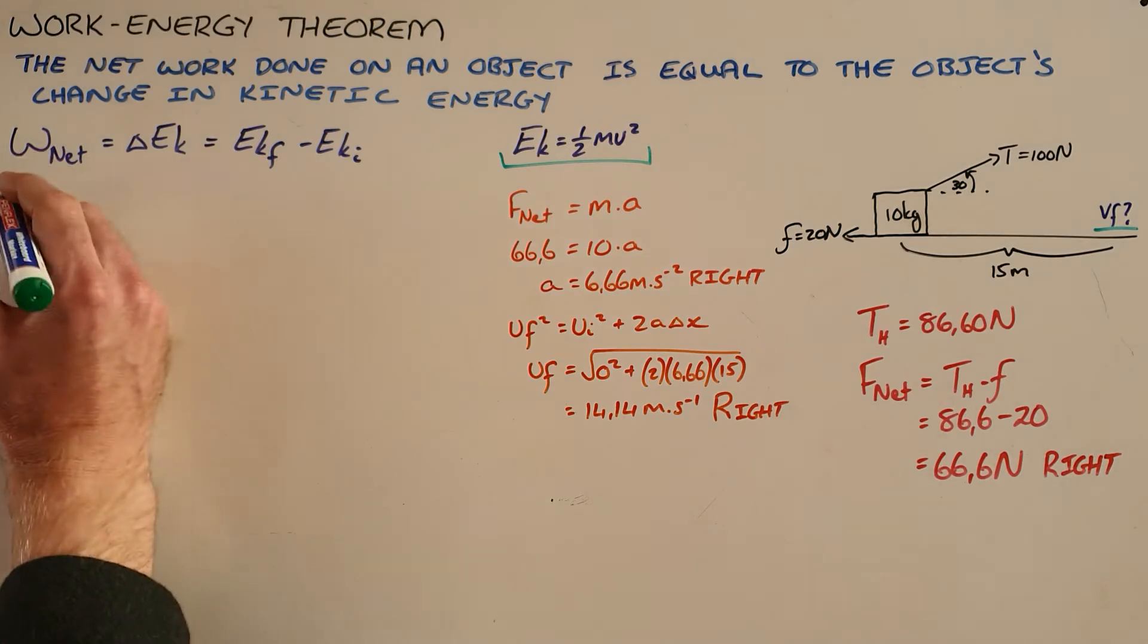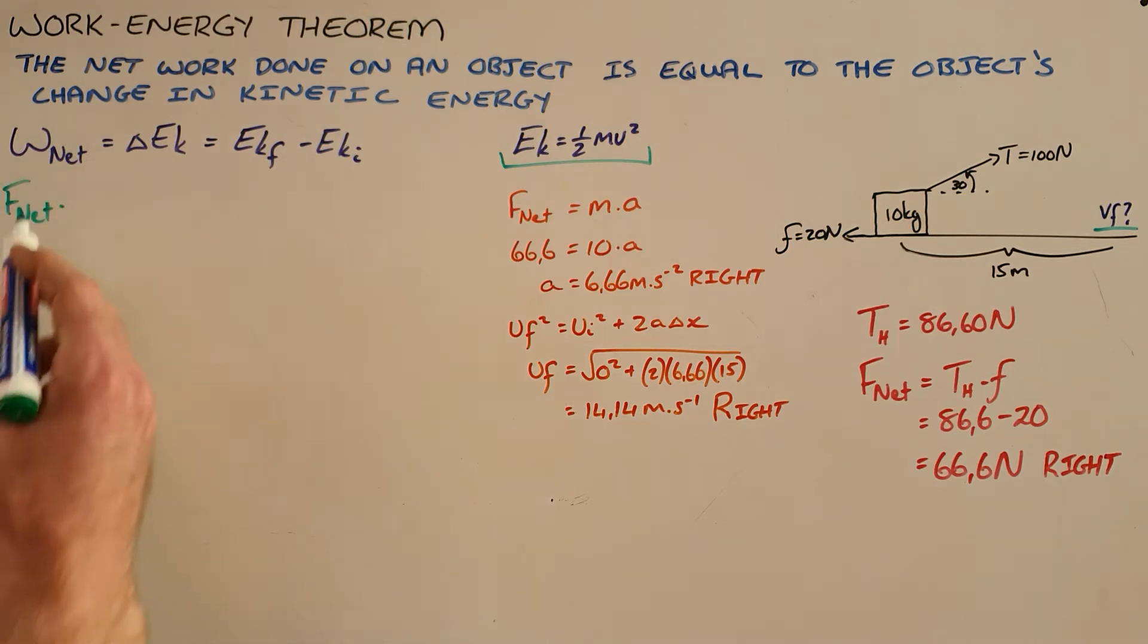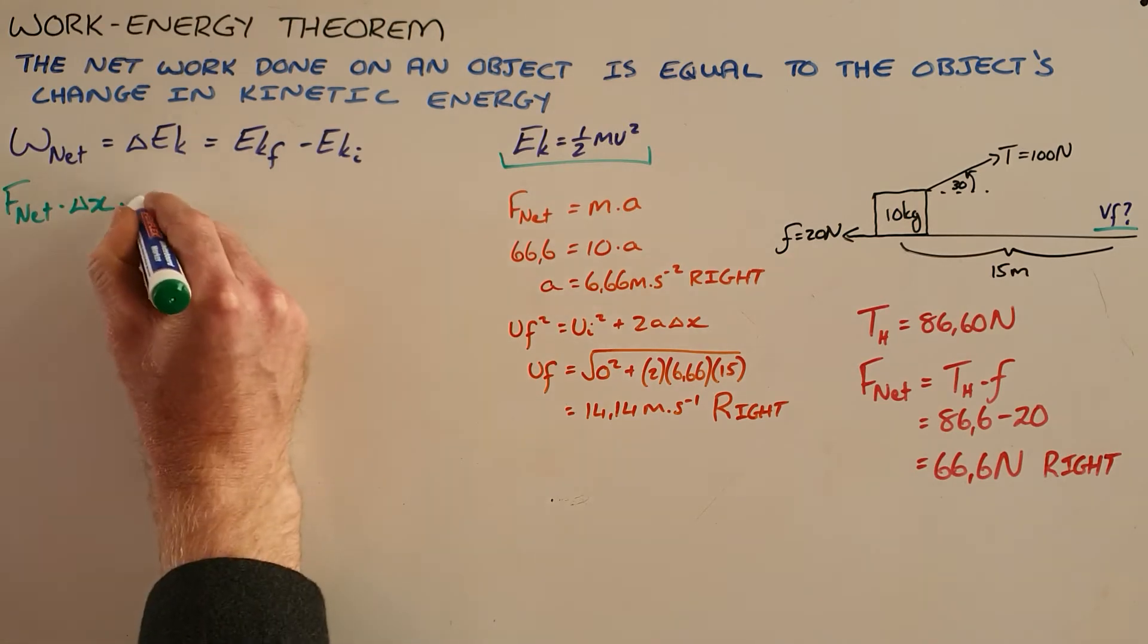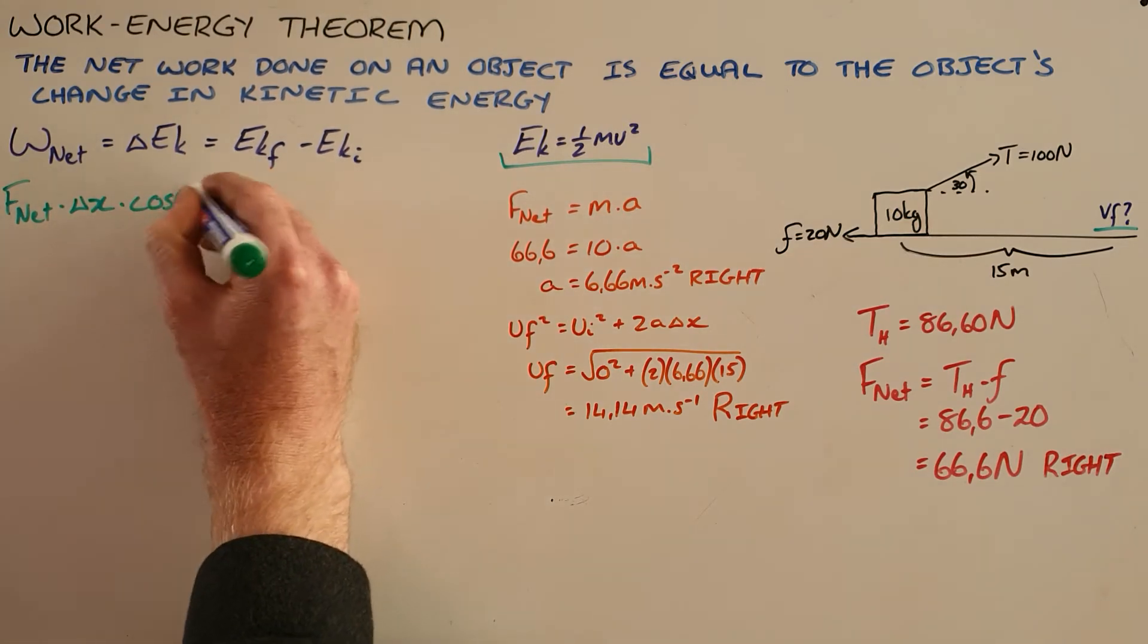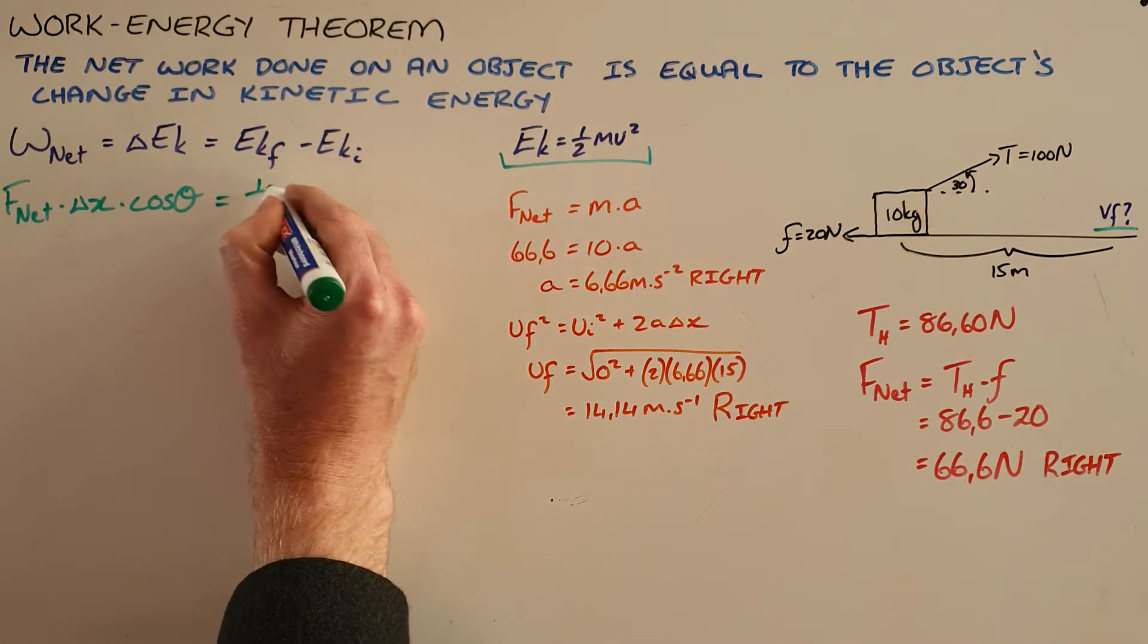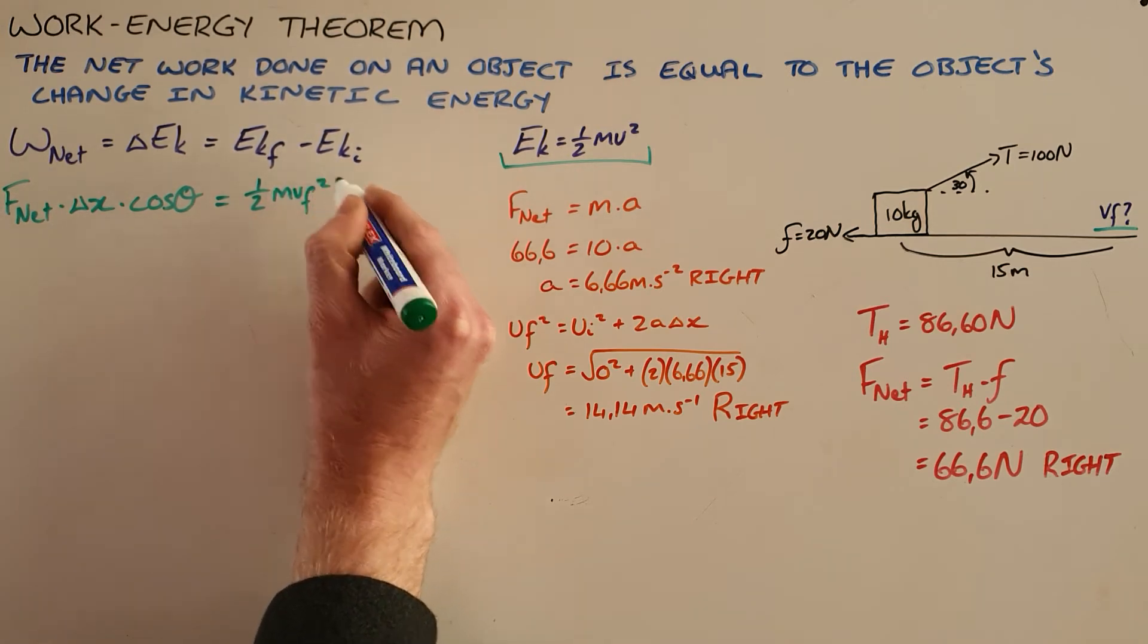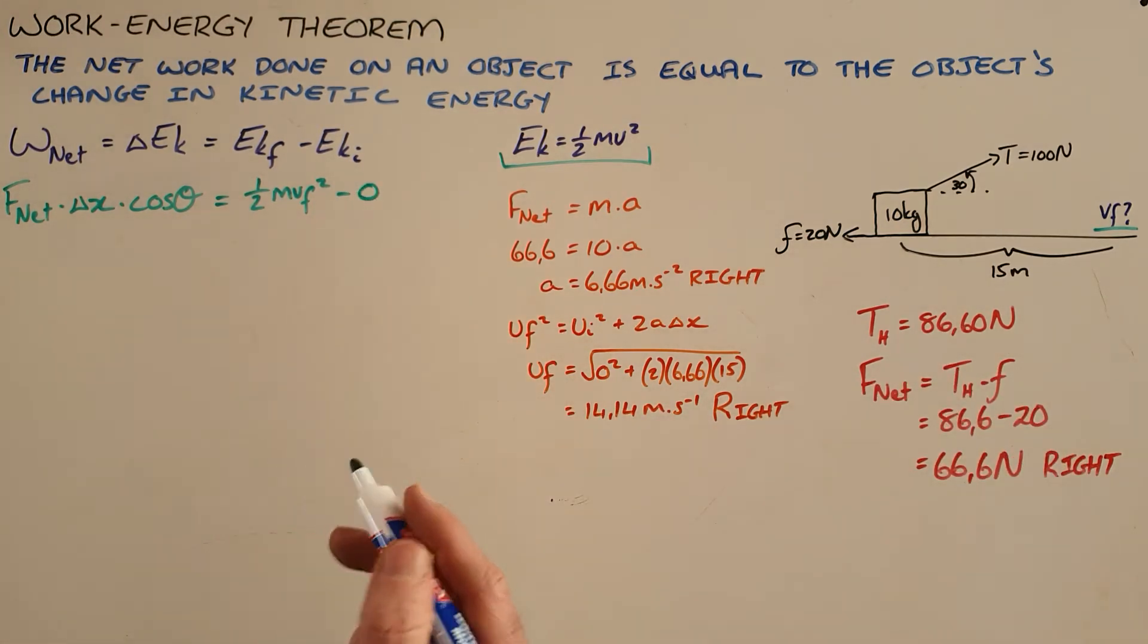So now what this allows us to do is we can, using the net force that is acting on this object, we can calculate the network because we know that network is equal to the net force multiplied by the displacement of the object multiplied by the cosine of the angle between these two. And the change in kinetic energy here is going to be the final kinetic energy, which is one half mvf squared minus the initial kinetic energy. And in this case, this object was stationary, so the initial kinetic energy was zero.